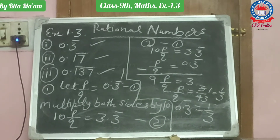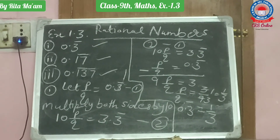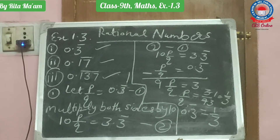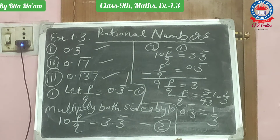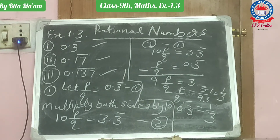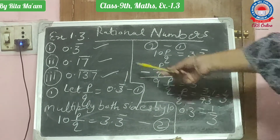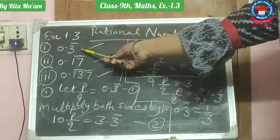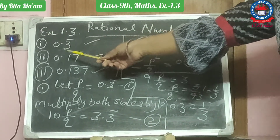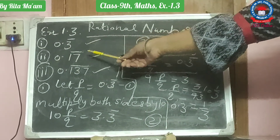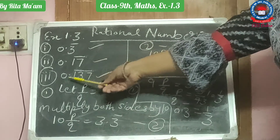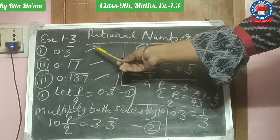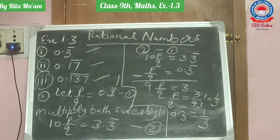In the last class, I told you about rational numbers and irrational numbers. Rational numbers are those which can be expressed in the form of P upon Q. There are some kinds of rational numbers which are repeating — those in which one digit is repeating, those in which two digits are repeating, and those in which three digits are repeating. We have to express these numbers in P upon Q form.